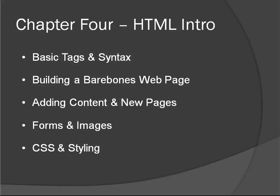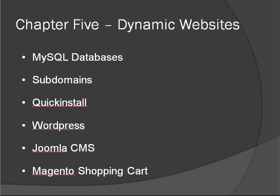Finally, we'll talk about CSS and styling so we can change how the website looks. Then we'll look into dynamic website platforms like WordPress, which is a blogging system, Joomla, which is a content management system, and Magento, which is an e-commerce platform or shopping cart. We'll install all of these using Quick Install, which comes with cPanel and HostGator. I'll also show you how to create MySQL databases, and we'll create a couple of subdomains — installing WordPress, Joomla, and Magento each on their own subdomain.